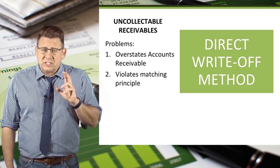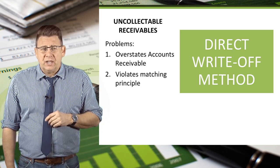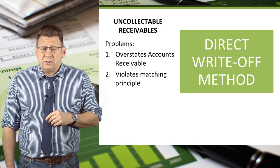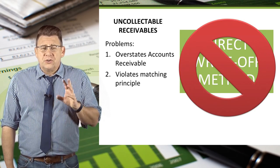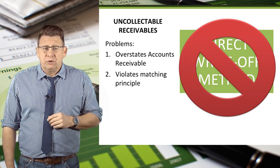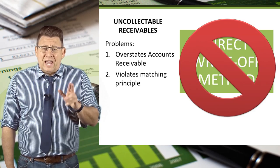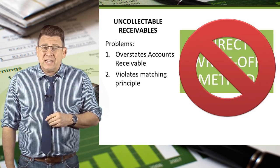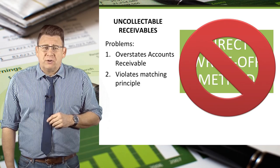Therefore, expense is not recorded in the same period as the revenue. For these reasons, the direct write-off method is not GAAP approved and should not be used. The allowance method is the GAAP approved method for accounting for uncollectible accounts.